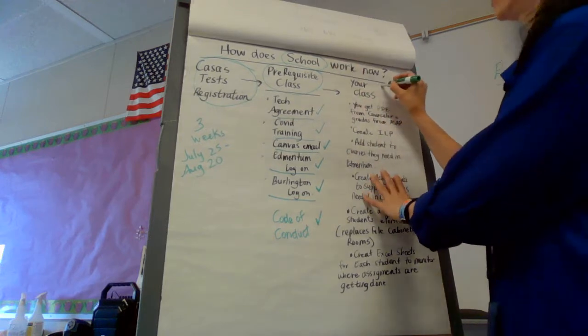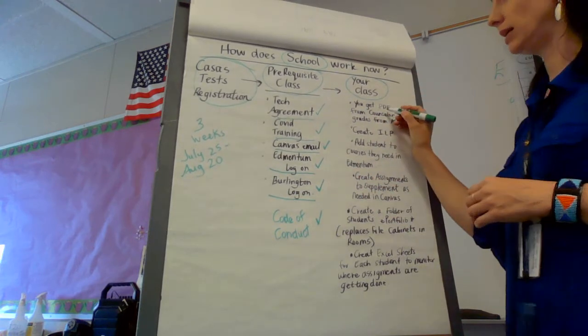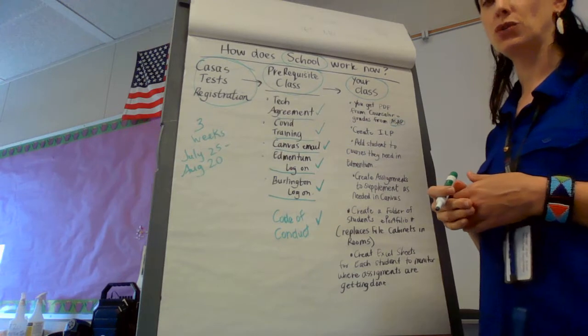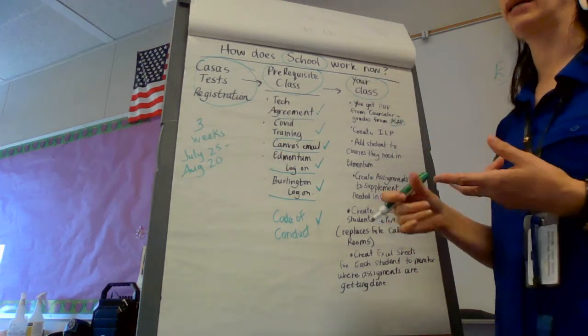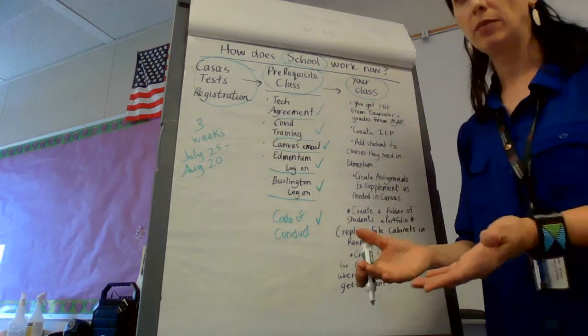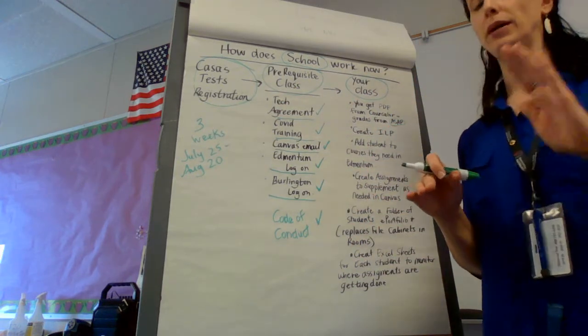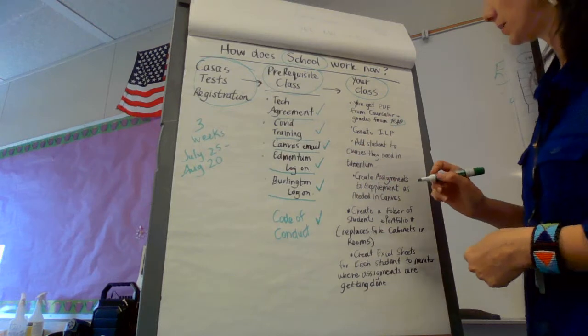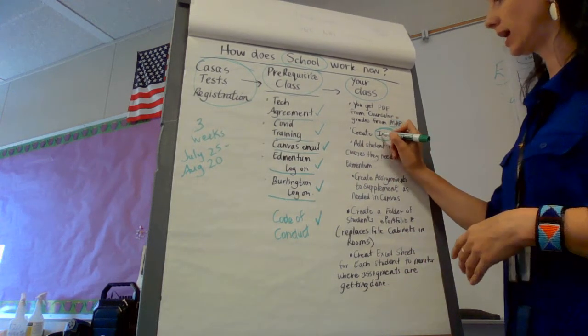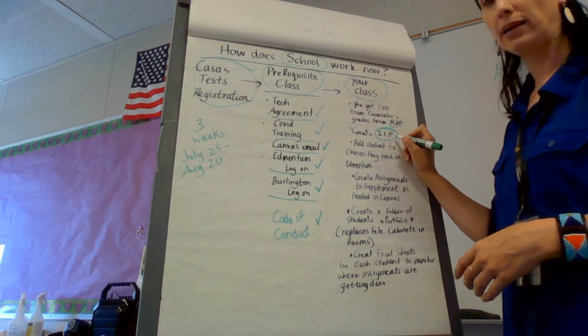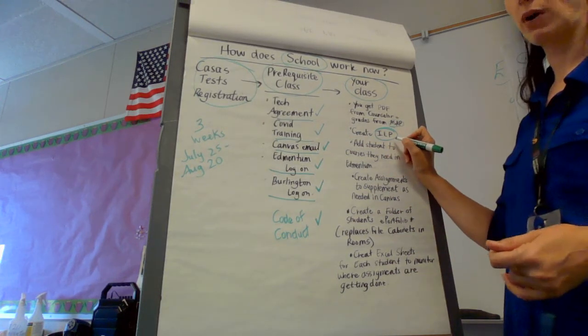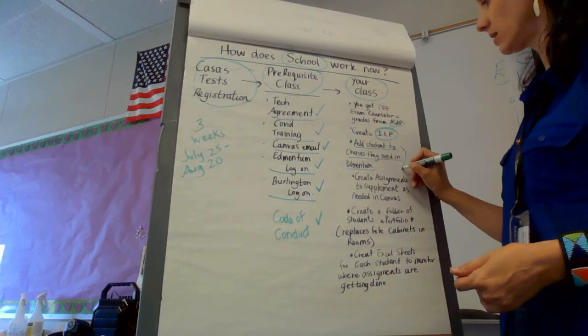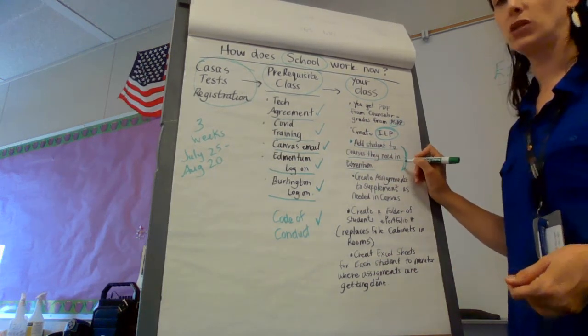So then they get put into your class. You get an email with a PDF of a student. And that's from your counselor, from the ASAP. You'll say you're getting a new student, just like always. Someone will send you an email and say this is their information. No paper exchange will be happening. So you have to really do a mind shift to understand that that's what's going to happen. And then just like always, you're going to create an ILP, the Individual Learning Plan, because all of our adults are at different spots. And then you're going to need to add the student to the courses they need in Edmentum. And this is really your springboard. That's what you're going to be doing. That's your starting spot.